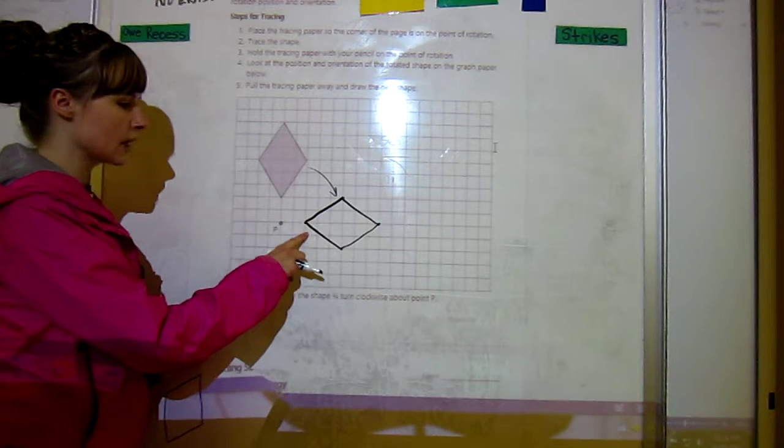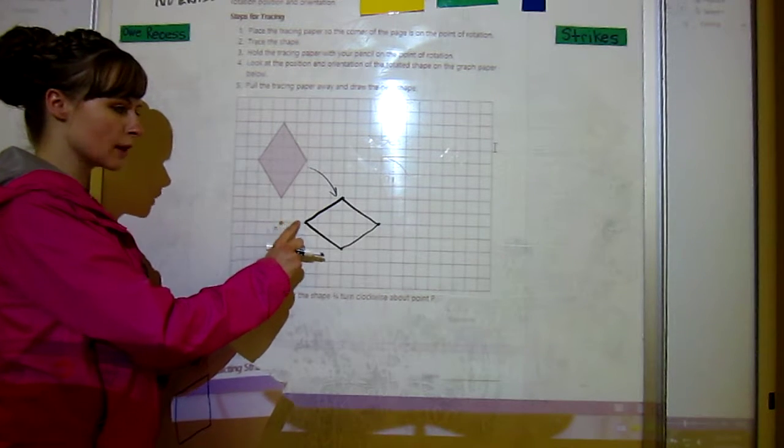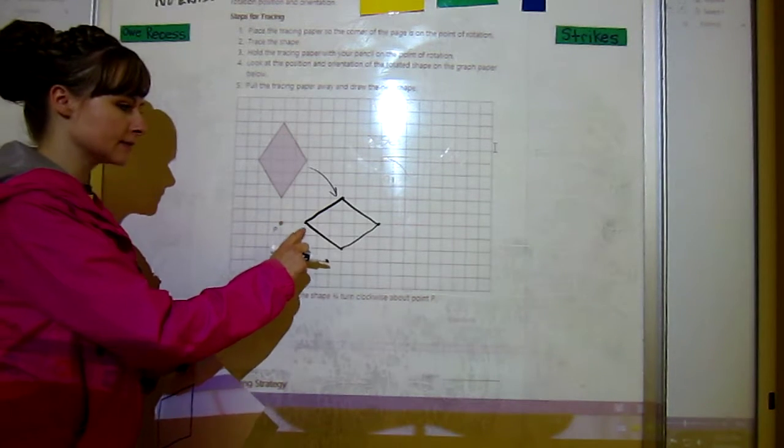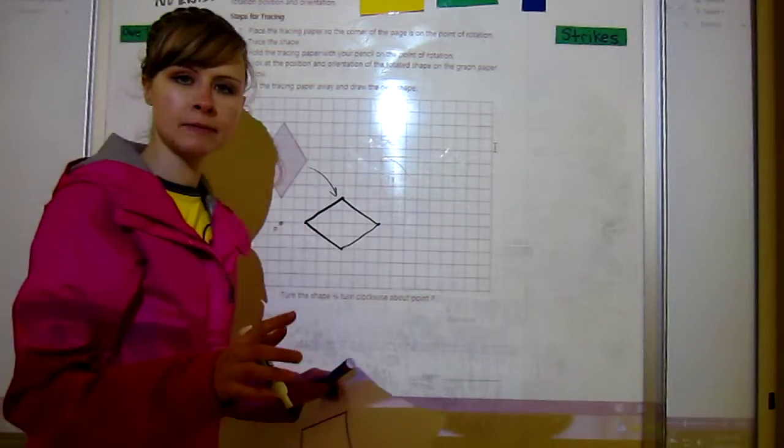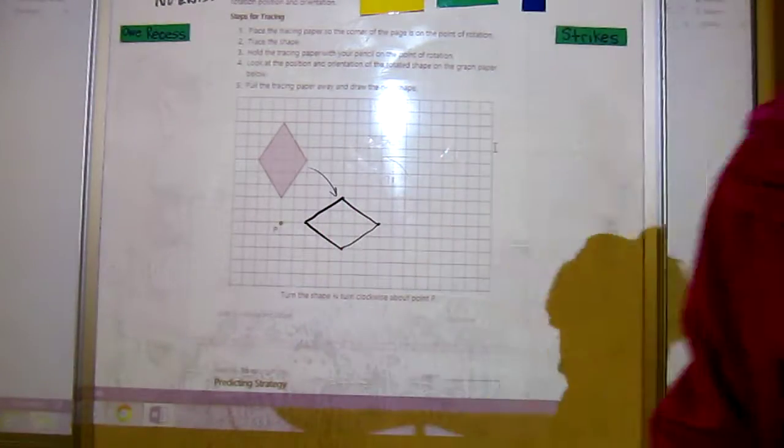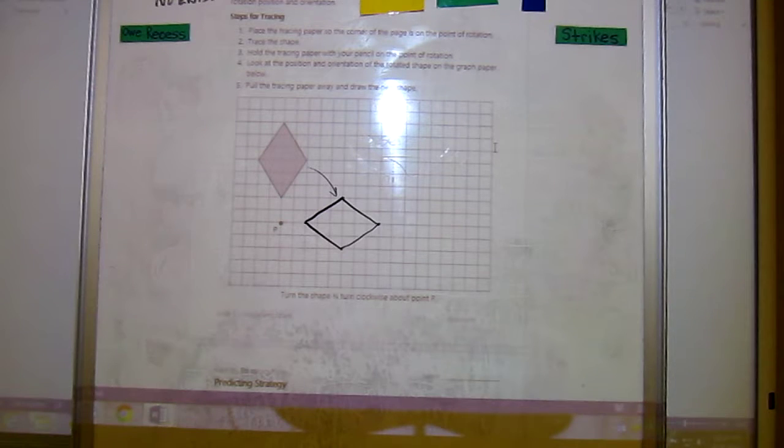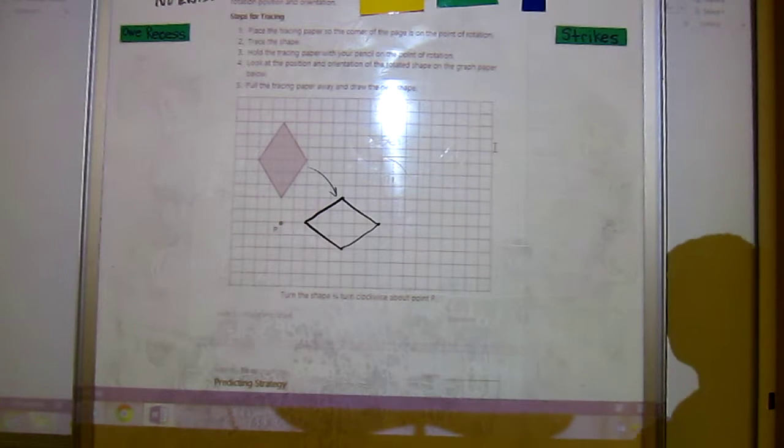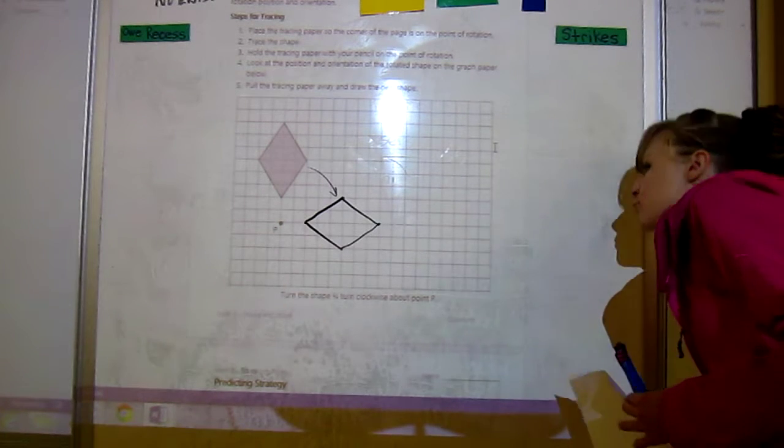So we've just rotated a shape. Make sure that you have one, two squares in between, and make sure you drew the shape in the same size as the original. Make sure it looks just like mine. Okay, so those are the steps for tracing.